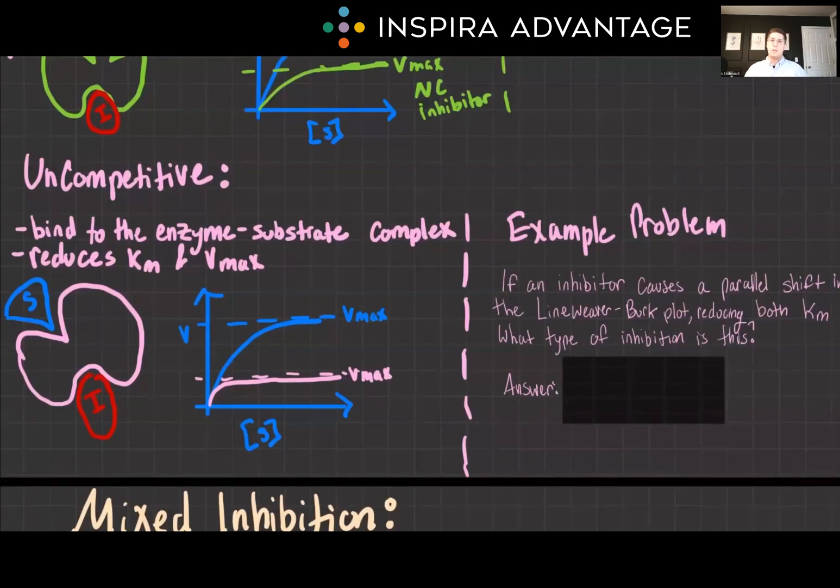Now let's talk about uncompetitive inhibition. This is a unique form of inhibition because the uncompetitive inhibitor will bind only to the enzyme-substrate complex, and this will reduce both KM and VMAX proportionally.